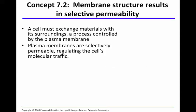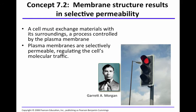Membrane structure results in selective permeability. This is something we discussed previously, but what does this really mean? We know that a cell has to exchange materials with its surroundings and that this process is controlled by the plasma membrane. These membranes are selectively permeable and they regulate the cell's molecular traffic, just like the signal light that Garrett Morgan developed.